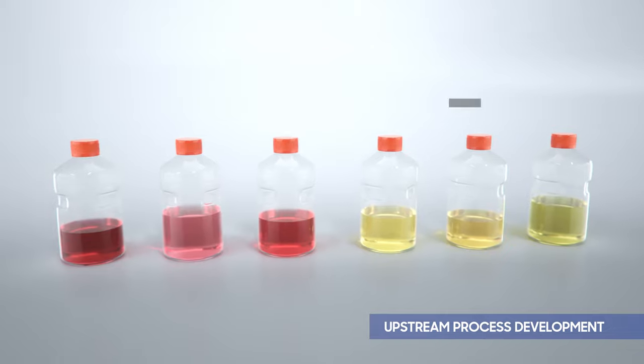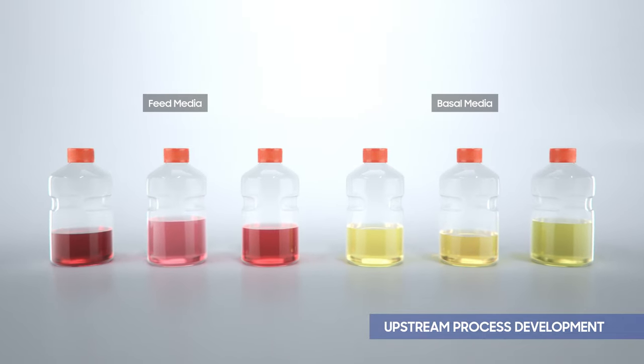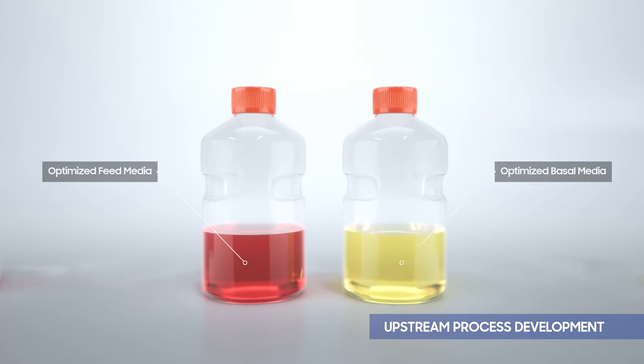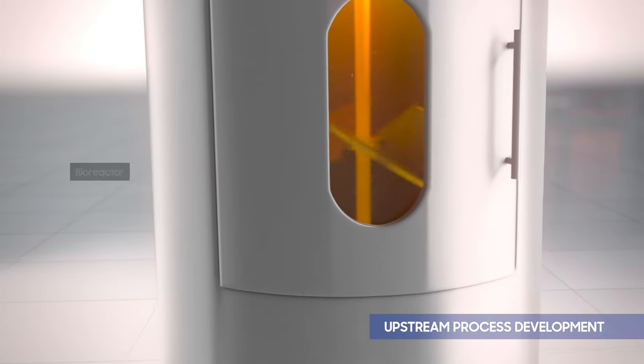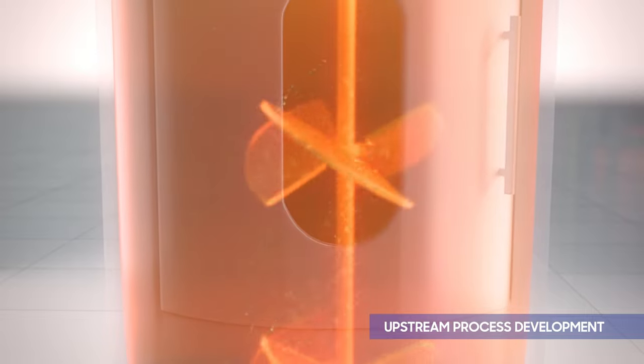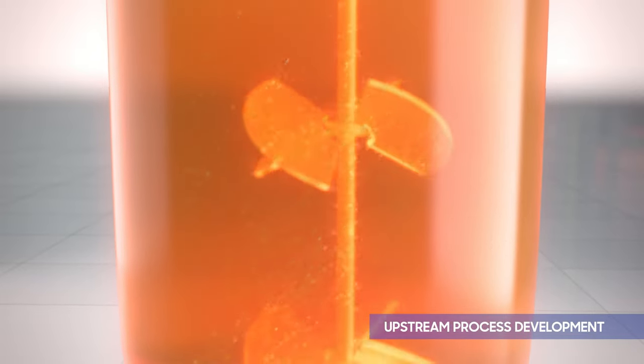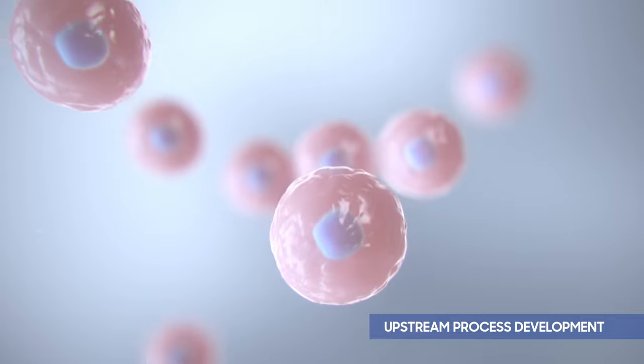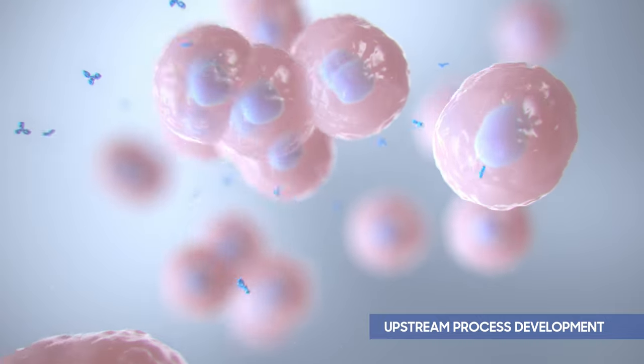During upstream process development, basal and feed media are optimized to ensure cell stability. In bioreactors, pH, dissolved oxygen, temperature and other parameters are continuously optimized for the cells' growth and viability to maximize production of your target protein.